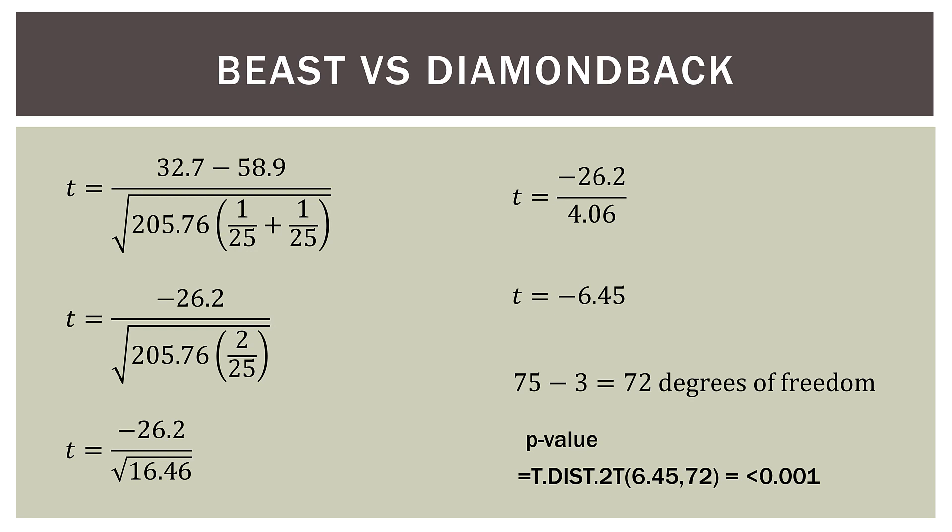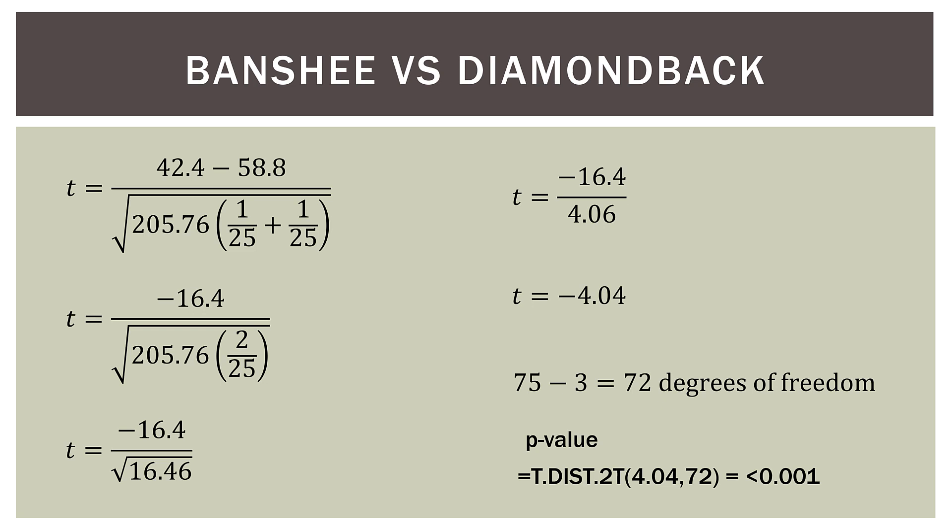For Beast versus Diamondback, we end up with a t-statistic of negative 6.45. Using the T.DIST.2T function in Excel, we get a p-value far less than 0.001. Therefore, the difference between Beast and Diamondback is also significant. For Banshee versus Diamondback, the t-statistic is negative 4.04, and using T.DIST.2T we get a p-value of less than 0.001 — so this difference is also significant. The differences between all three pairs of coasters are statistically significant, meaning no two coasters are equal to each other in average wait time.